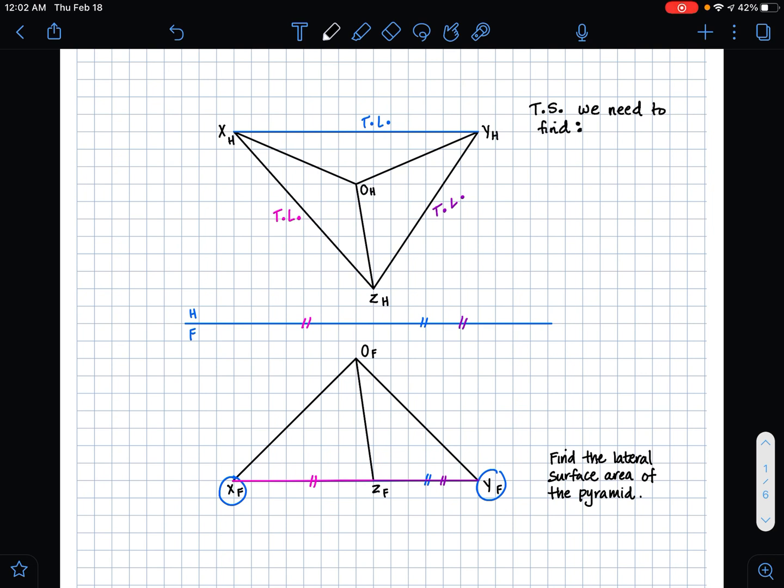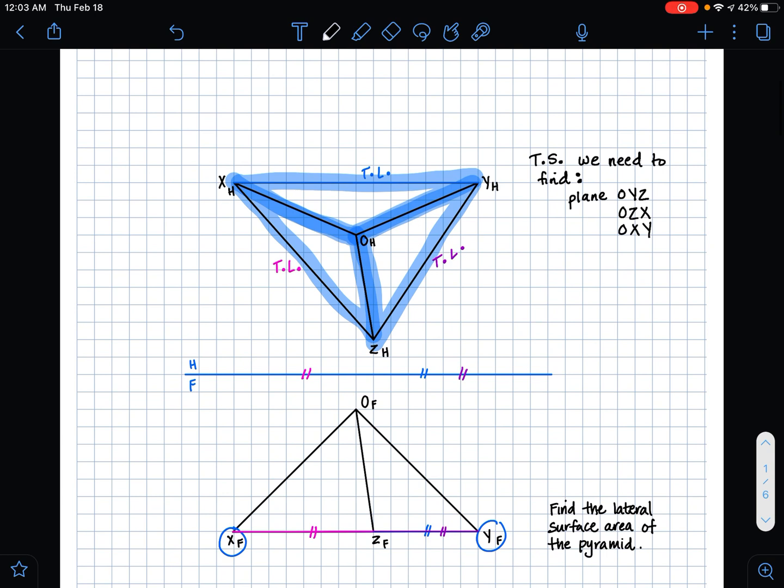So the true shapes that we need to find are of planes O, Y, and Z; O, Z, and X; and O, X, and Y. And the way that we're going to find those is by using the edge view method.